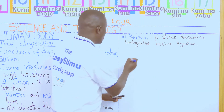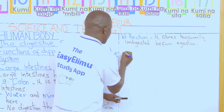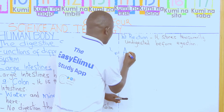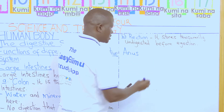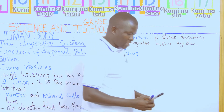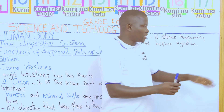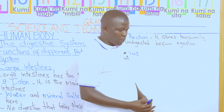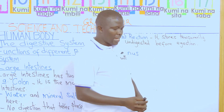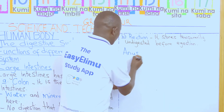We have the final part of our digestive system — we call it the anus. The anus is the last part; it is an opening to the outside and it is the last part of the digestive system.